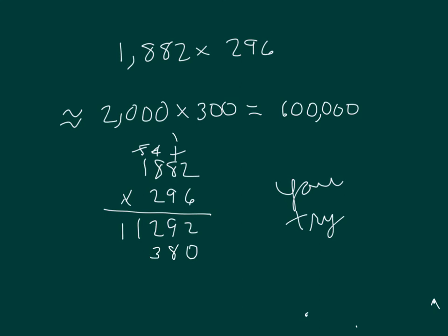9 times 8 is 72 again, plus 7 is 99. I'm sorry, 79. 9, regroup of 7. 9 times 1 is 9, plus 7 is 16. So there's that second step.